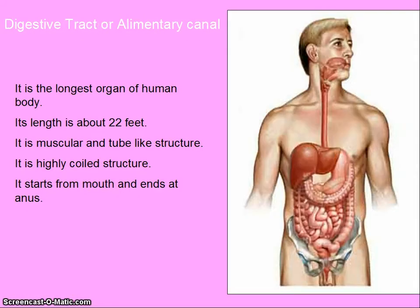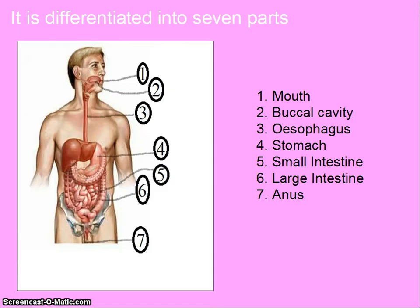The digestive tract is the longest organ of human body. Its length is about 22 feet. It is a muscular and tube-like structure. It is highly coiled. It starts from mouth and ends at anus. It is differentiated into seven parts.